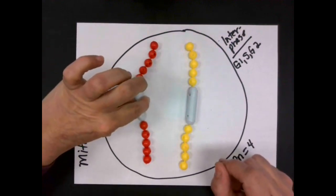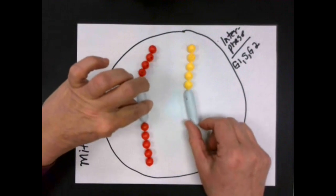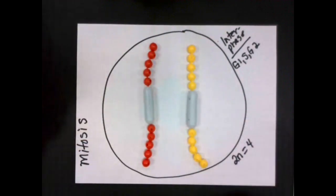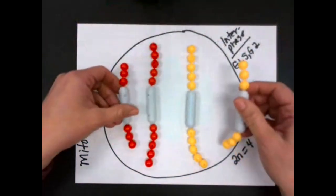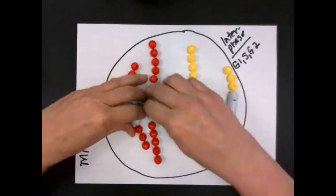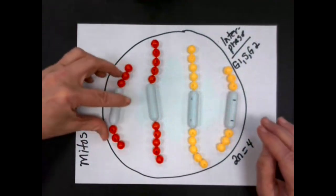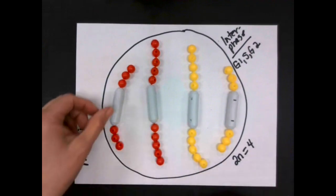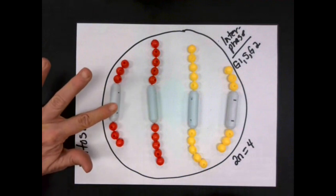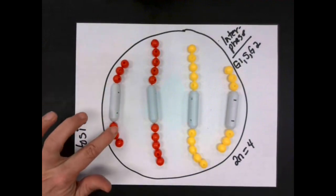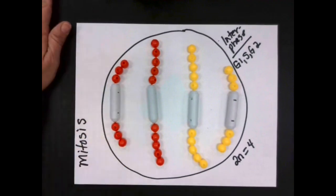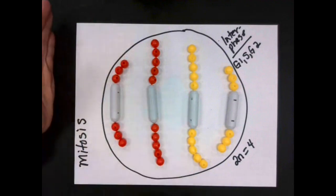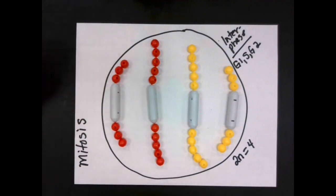So right now we have one chromosome from the father and one chromosome from the mother, and we could call this chromosome number one. We'll go ahead and add two more — another chromosome from the father and another chromosome from the mother. This portion of the chromosome here is what we call the centromere; this is where they are connected. Each of these beads here represents a gene. This is a very simplified model — humans are going to have thousands of genes on each chromosome.